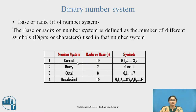For the decimal number system, the base is 10, so the symbols used are 0 to 9. In the binary number system, the base is 2 because 0 and 1 — two symbols — are used.